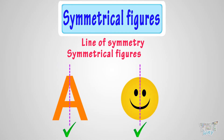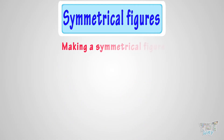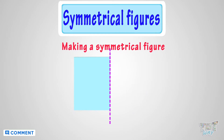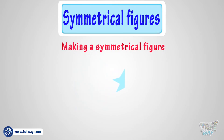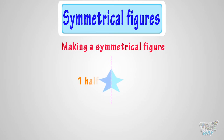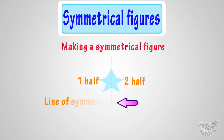Kids, now let's learn making a symmetrical figure. It's interesting. Let's take a piece of paper. Now fold it halfway and make any shape along the fold, like this. And cut it out. Now open the fold. What do you see? Here is a symmetrical shape with two halves that can cover each other, and this line of fold is our line of symmetry.